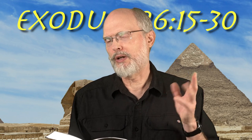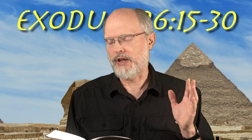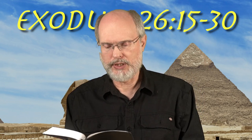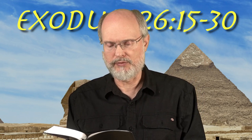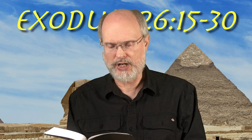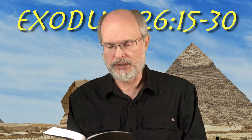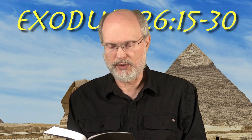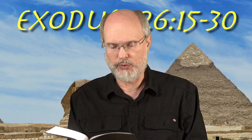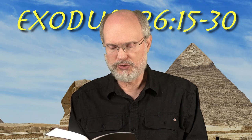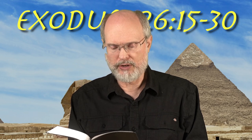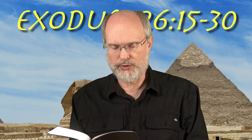So let's read it. We're just going to read verses 15 to 17. Then you shall make the boards for the tabernacle of acacia wood, standing upright. Ten cubits shall be the length of each board, and one and a half cubits the width of each board. There shall be two tenants for each board fitted to one another. Thus you shall do for all the boards of the tabernacle.